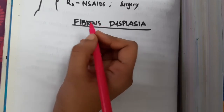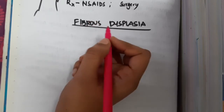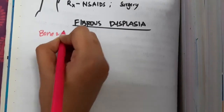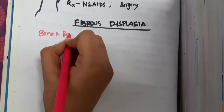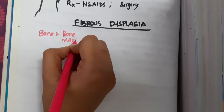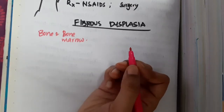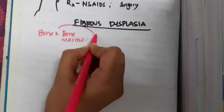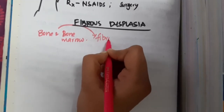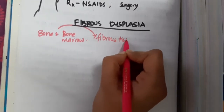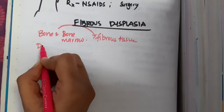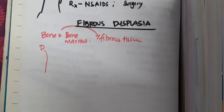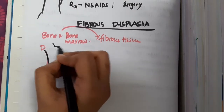In fibrous dysplasia there is a defect in the bone and bone marrow. Normally, bone and bone marrow contain osteoclasts, osteoblasts, osteocytes, and some fibroblasts. In this condition, the normal cells of the bone and bone marrow are replaced by fibrous tissue. It is most commonly seen in the diaphysis.